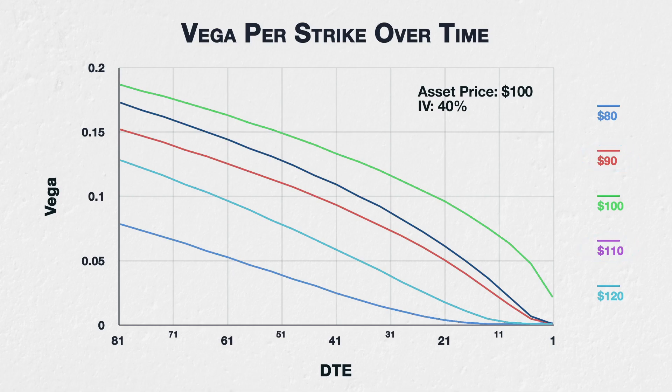Moving further away from the underlying price to the $80 and $120 strikes, we can see their vega reduces at a relatively steady rate at first, then this rate slows down as we come into expiry. This happens earlier for these strikes because they are further away from the underlying price, and they will therefore lose most of their extrinsic value sooner as well.